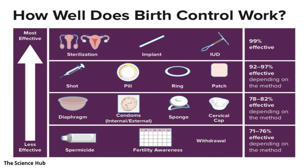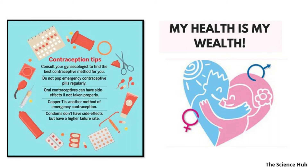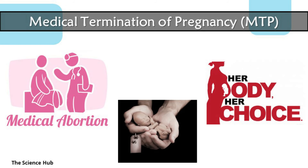Contraception tips for well birth control: Consult your gynecologist to find the best contraceptive method for you. Do not use emergency contraceptive pills regularly. Oral contraceptives can have side effects if not taken properly. Copper-T is another method of emergency contraception. Condoms don't have side effects but have a higher failure rate. Medical termination of pregnancy (MTP), also known as medical abortion, refers to the termination of the fetus.